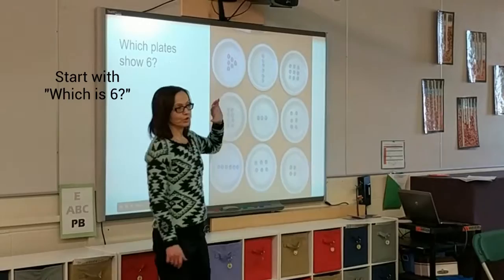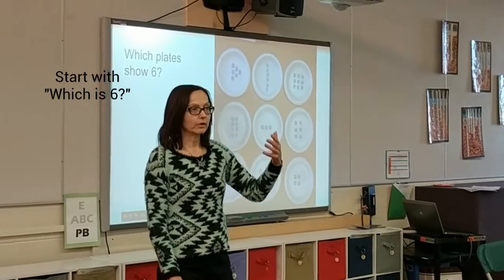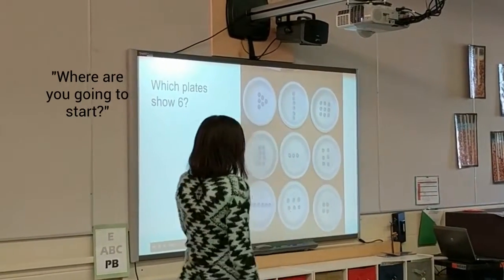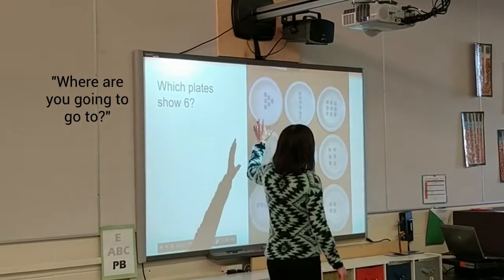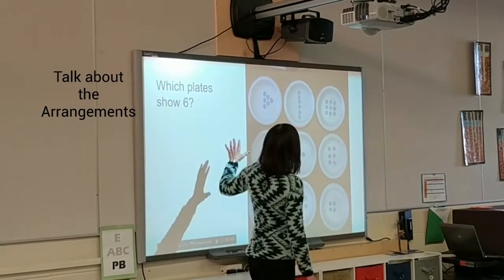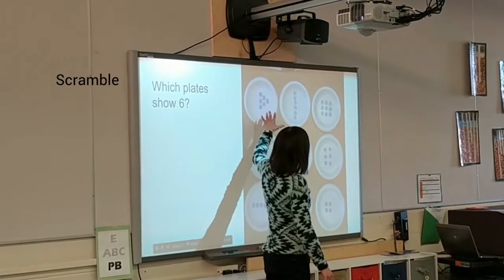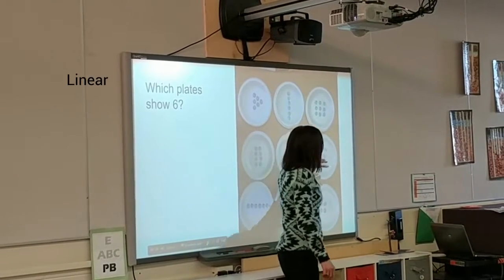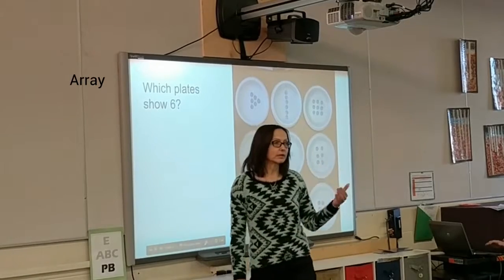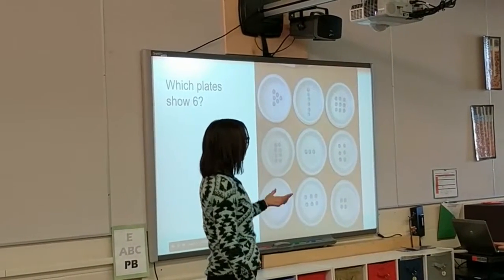I would start with which is six, and then how are they counting? Where are you going to start? Where are you going to go to? Which is six? And then I would start talking about the arrangements, because in subitizing that's what that is. That would be our scrambled, that's our linear, that's our array — and I talk to the kids about those different arrangements.